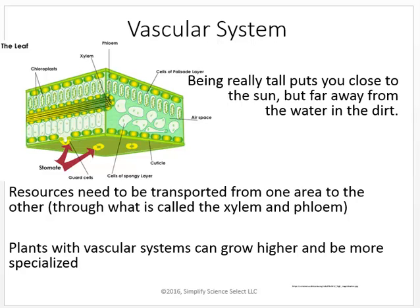Plants need a vascular system because being tall is an advantage — you can reach above other shorter plants, get closer to the sun, and have greater access to sunlight. But the water is pulled from the dirt far below. So some resources start at the bottom and need to move up, and some resources start at the top and need to move down. That's why we have xylem and phloem.